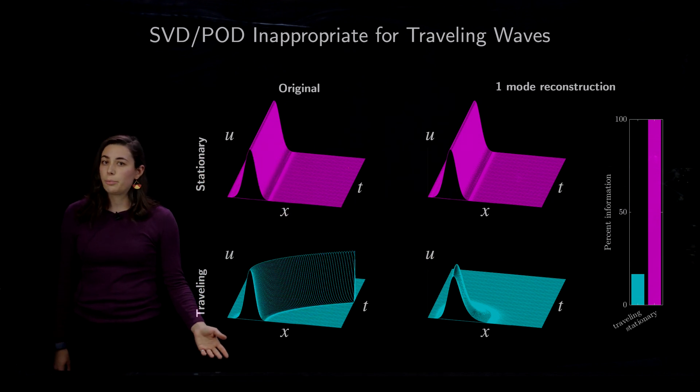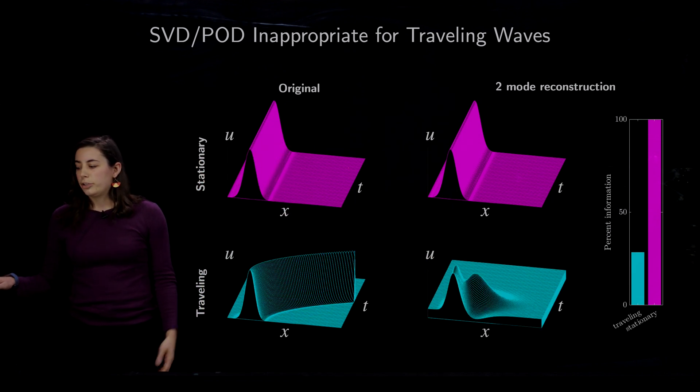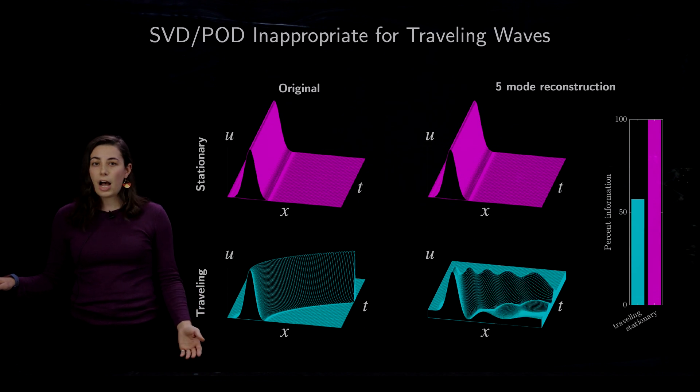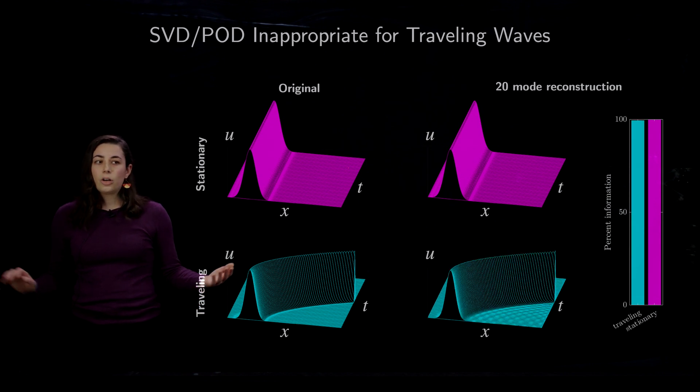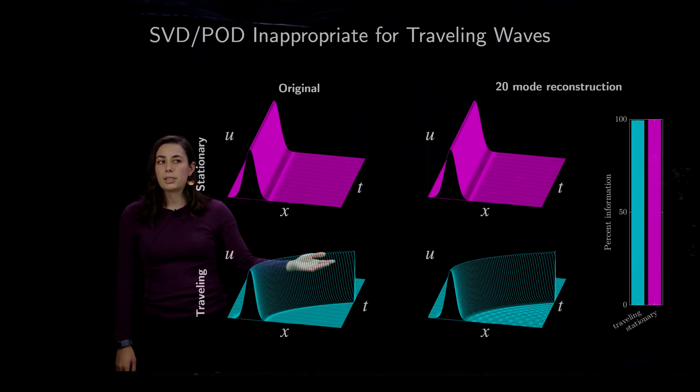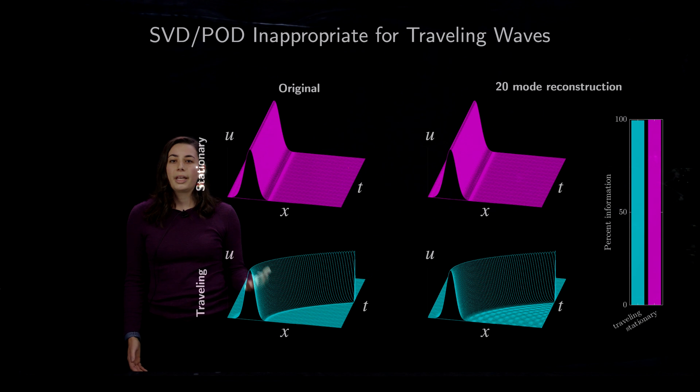So what happens when we increase the number of modes? Here's two modes, still does not do a great job, 5, 10, and we need almost 20 modes to be able to represent this wave and capture all of the information. So this is not a desirable outcome. We would like to be able to capture this traveling wave in a very low number of modes.